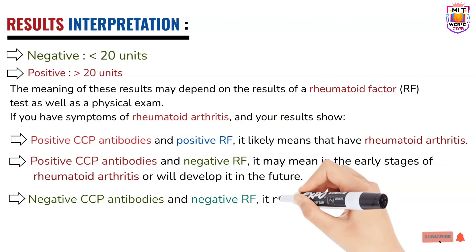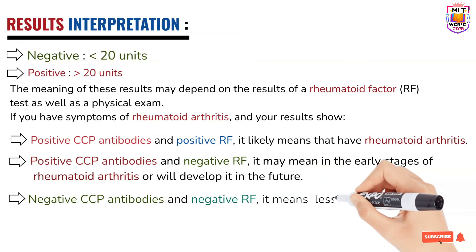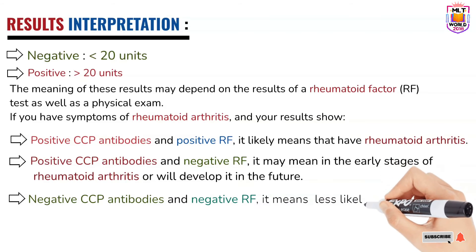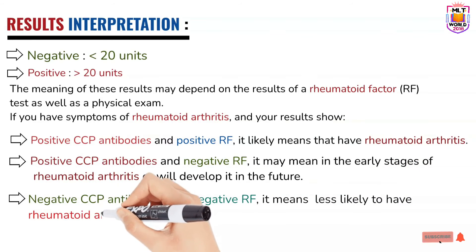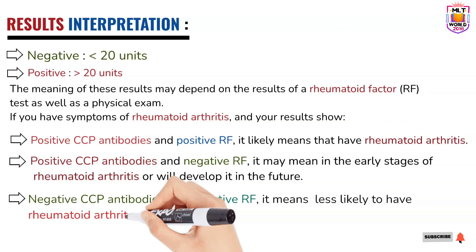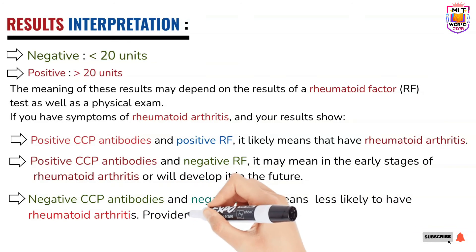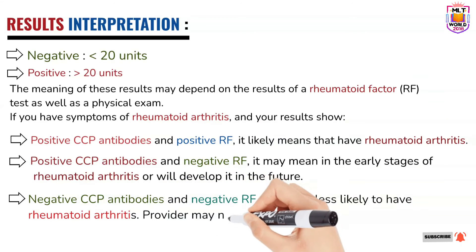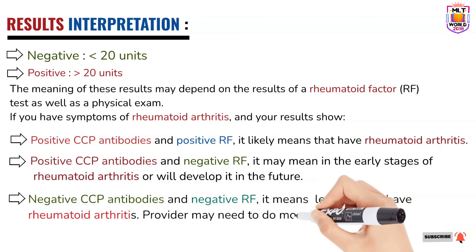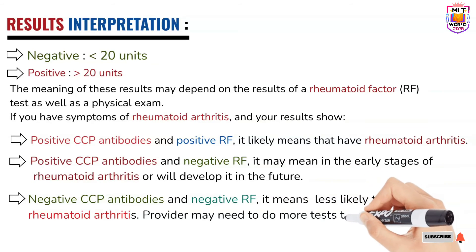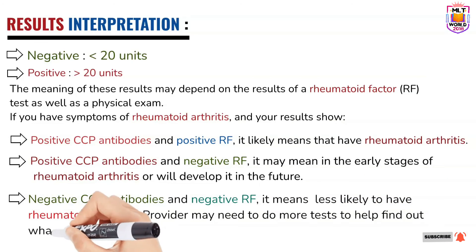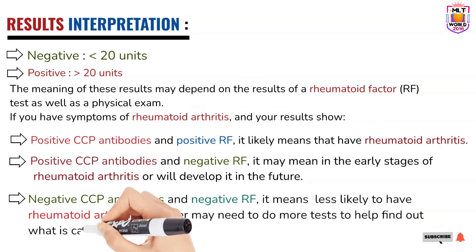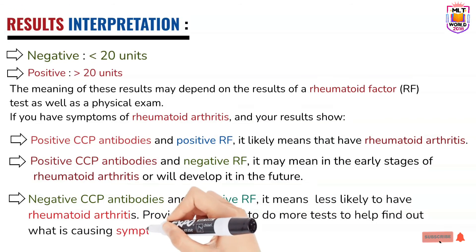If the patient is suffering from symptoms but both tests are negative, doctors have to find some other root cause for the disease — the patient may be suffering from a different issue. Overall, the anti-CCP test is a more confirmative test for the diagnosis of rheumatoid arthritis, which is one of the most common autoimmune disorders, especially in older ages.